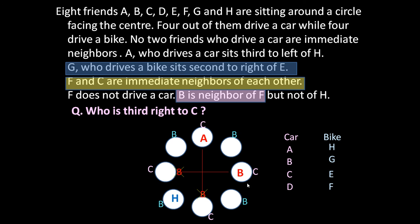Now, how can F be incorporated? Either this side or that side of B. But since F and C are immediate neighbors of each other, and F must be next to B, F and C cannot both fit on one side of B. So F is placed on one side of B and C is placed next to F. C drives a car — matching our alternating system — and F drives a bike.